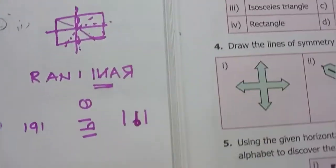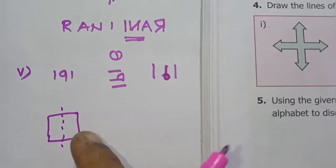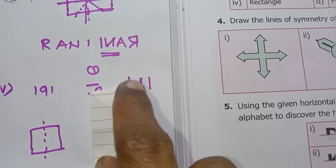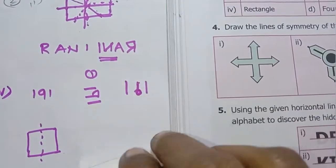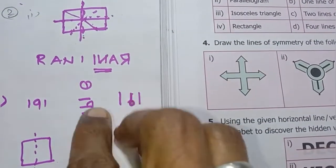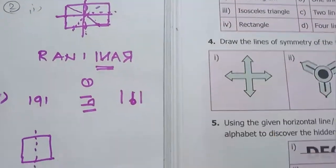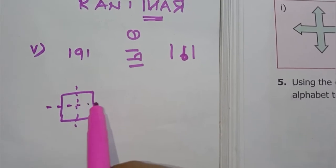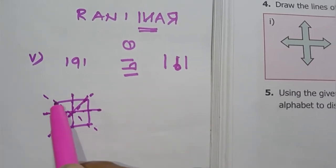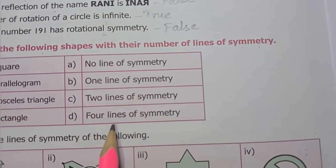Now for a square — all sides are equal. If you fold the square, the two halves are equal. Folding it in different directions: one, two, three, four — so a square has four lines of symmetry.